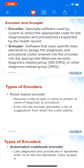Healthcare facilities must assign diagnosis and procedure codes to every patient encounter. These are the codes that are submitted to the insurance company on the bill, and that's how your hospital or your physician office gets reimbursed. The encoder is a specialty software used by coders to select the appropriate code for the diagnosis and procedure supported by the health record.